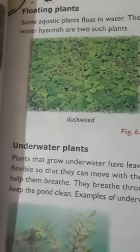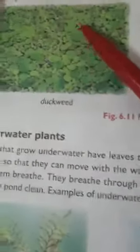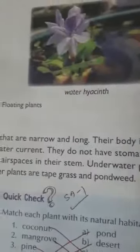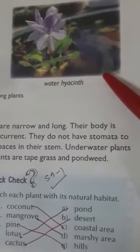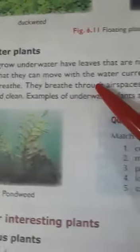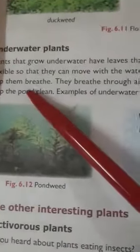Next are floating plants. Some aquatic plants float in water and have spongy swollen parts. Duckweed and water hyacinth are two examples of floating plants. Lotus and water lily are the examples of fixed plants.